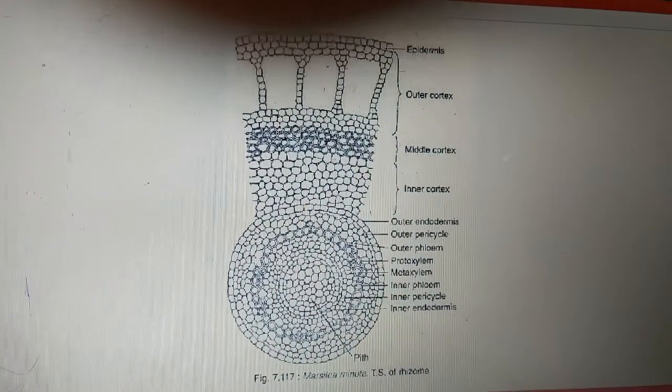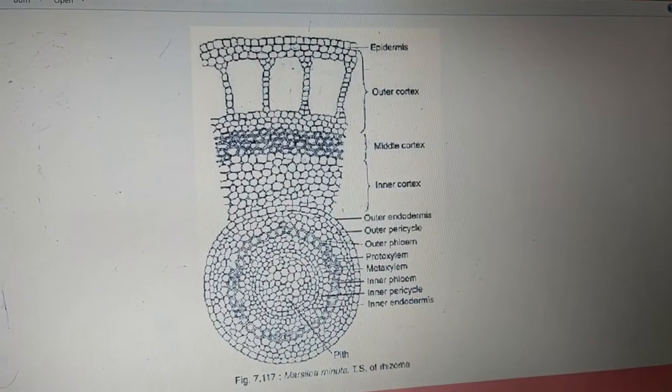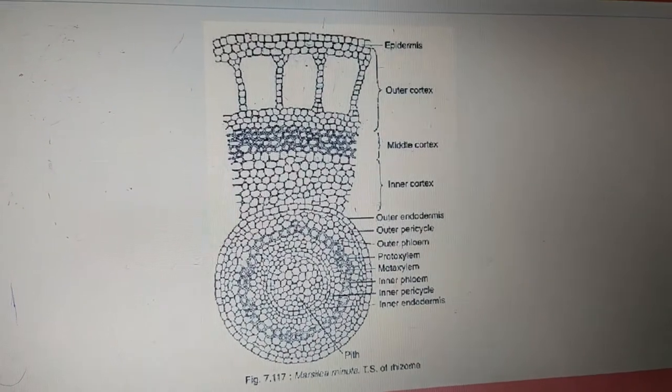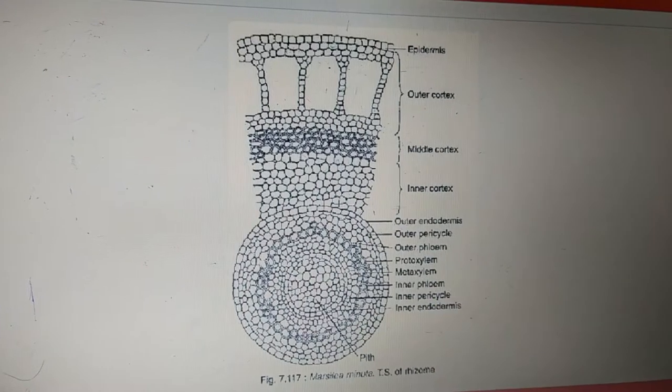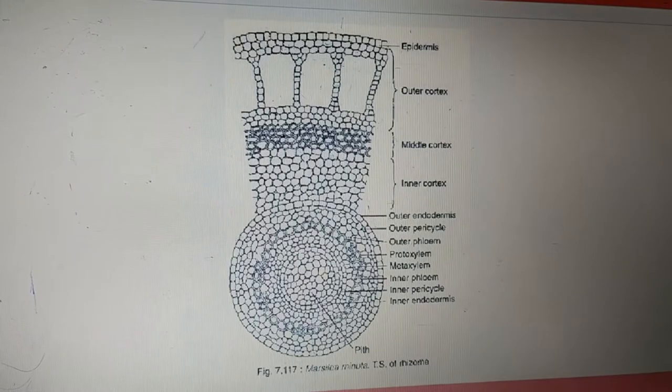The description regarding this amphifloic solenostele we have spoken in our stelar types and evolution of tertiary to fight succession. The stele called as amphifloic solenostele occupies the center of the rhizome. Xylem occurs in the form of a ring which is surrounded on either side by phloem.